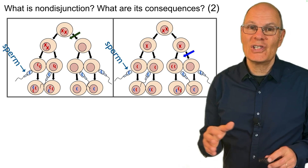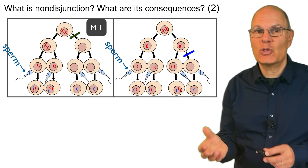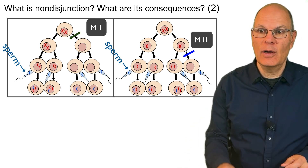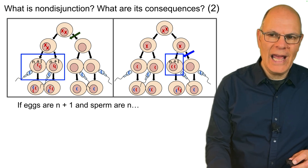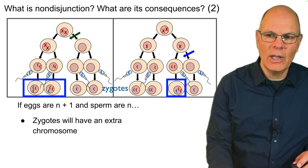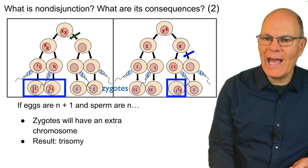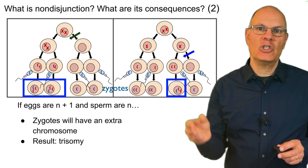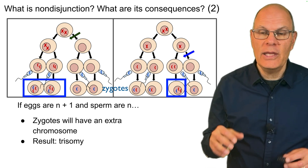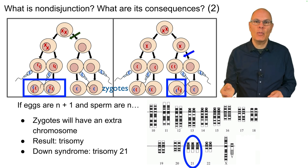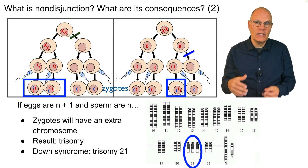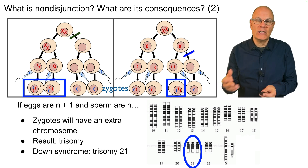Nondisjunction during meiosis I or meiosis II can result in gametes that have an abnormal number of chromosomes. If the eggs are N plus one — they have the haploid number plus one more — then the zygote will have an extra chromosome, resulting in a trisomy. Tris means three: instead of a homologous pair with two, we have three. The most famous example is Down syndrome, a trisomy of the 21st chromosome, which has various developmental consequences and delays.